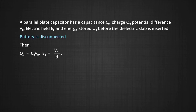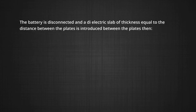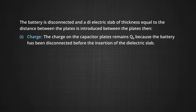Now, the battery is disconnected, and a dielectric slab of thickness equal to the distance between the plates is introduced between the plates. Point 1: the effect on the charge stored. The charge on the capacitor plate remains the same, that is Q₀, because the battery has been disconnected before the insertion of the dielectric slab, and the charge cannot come from anywhere.